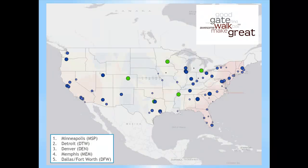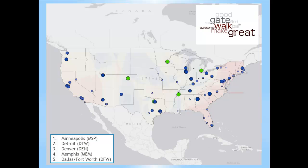When we start to map these out, we can see that looking at good topics — 'gate,' 'walk,' 'great,' 'awesome' — you get kind of similar results to what Travel and Leisure shows. You see Minneapolis, Detroit, Denver, Memphis, and Dallas-Fort Worth. There isn't a huge amount of spatial clustering there.